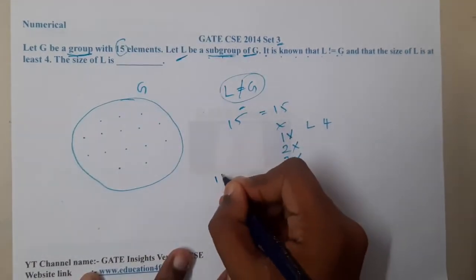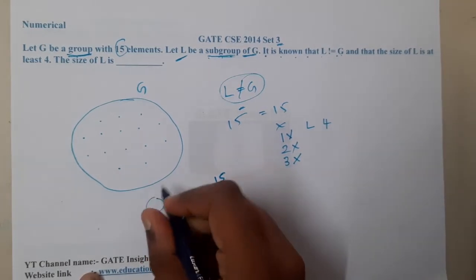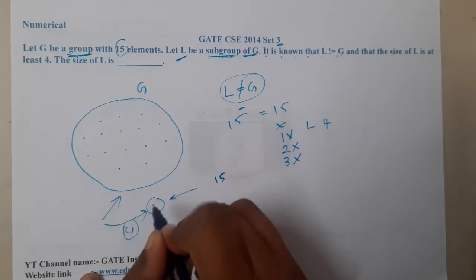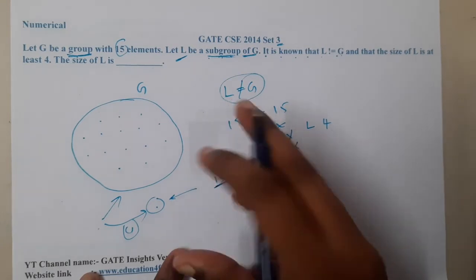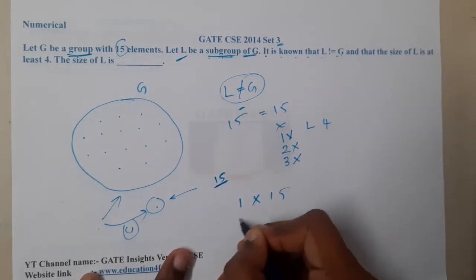Whenever we are discussing groups and subgroups, if your group is having 15 elements and you want to select a subgroup from it which is also a group, there are a few combinations. So if you are selecting a group which is also a subgroup, there are a few combinations.